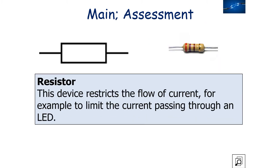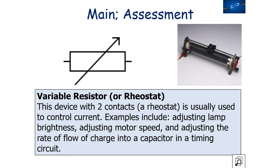A resistor restricts the flow of current — for example, to limit the current passing through a device such as an LED. A variable resistor or rheostat is a device with two contacts usually used in a circuit to control the current. Real-world examples of a variable resistor include adjusting lamp brightness, adjusting motor speed, and adjusting the rate of flow of charge into a capacitor in a timing circuit.